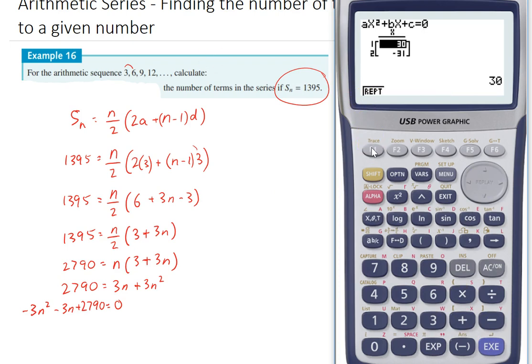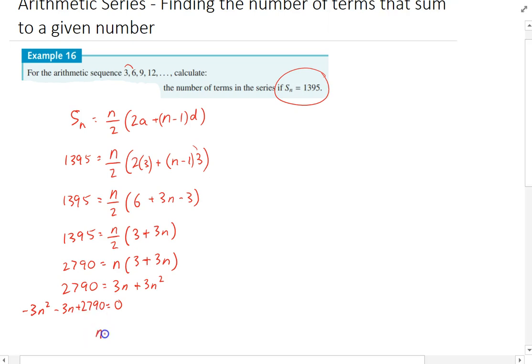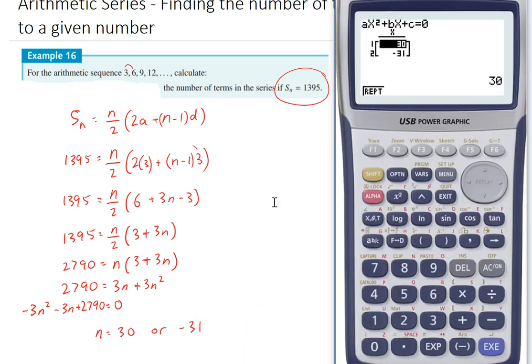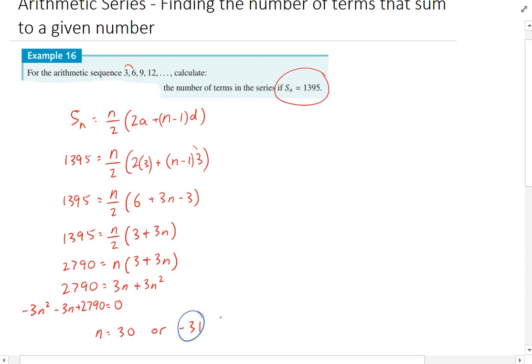Solve it. Okay, so two n values - I've got n equals 30 or negative 31. And so this is one of those cases where just because your formula spits out an answer doesn't mean it's right. It doesn't make sense to have negative 31 terms, so we can just write disregard.